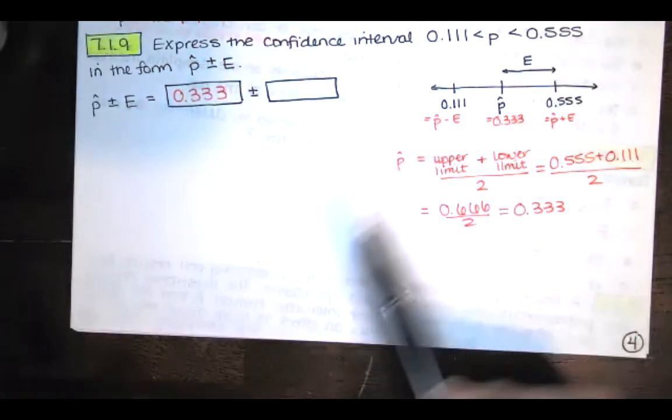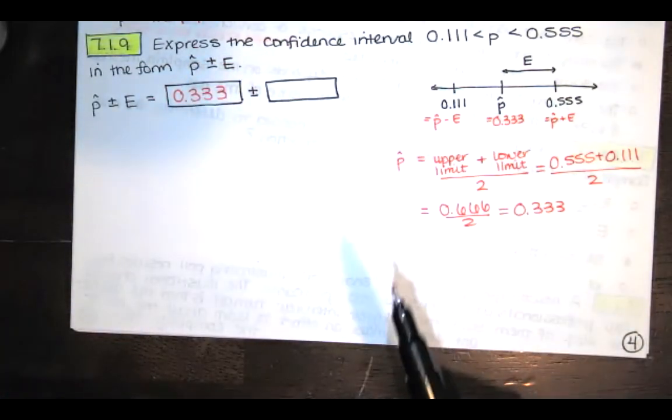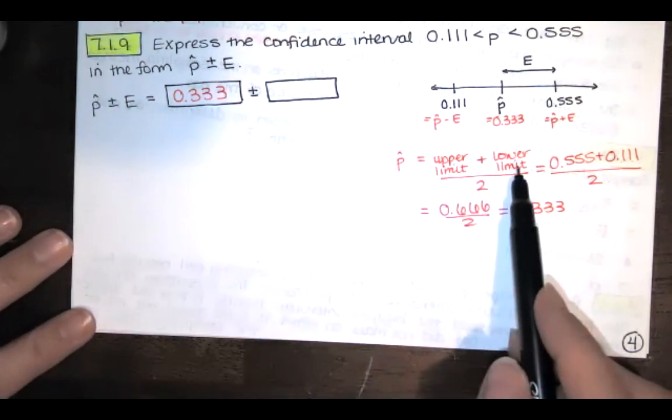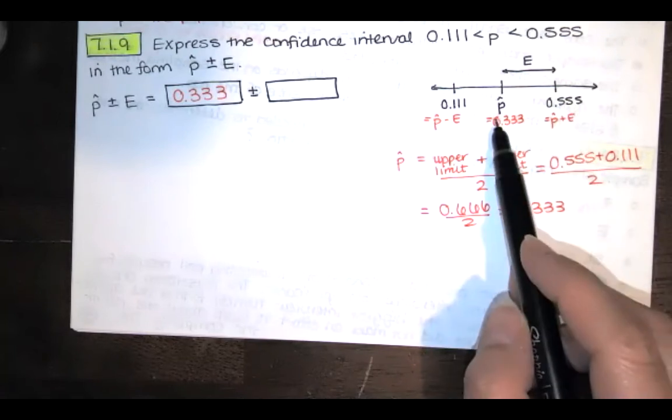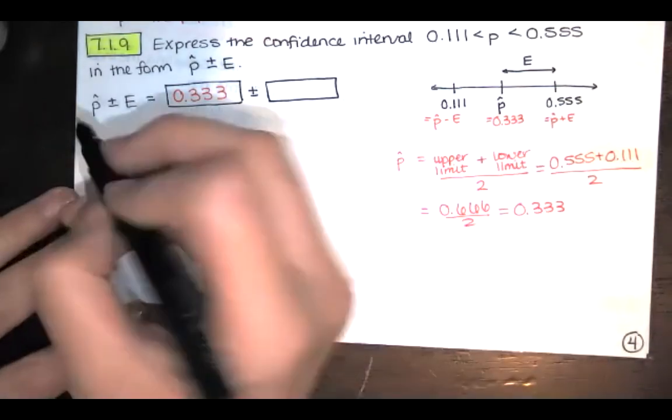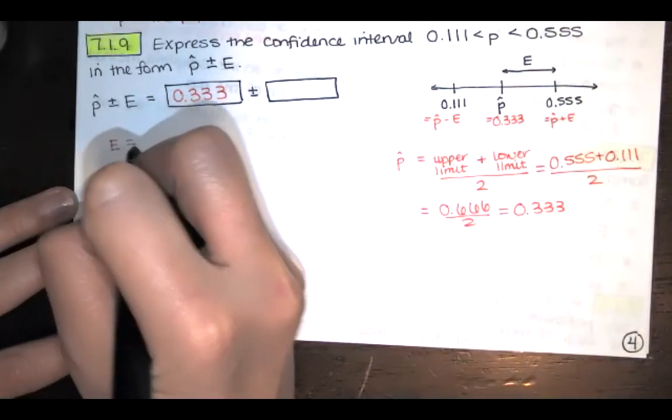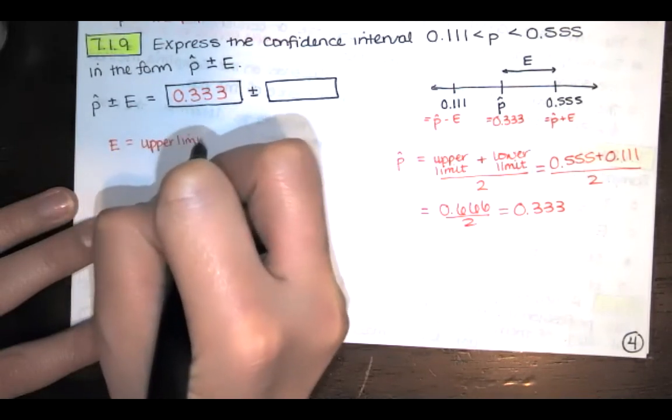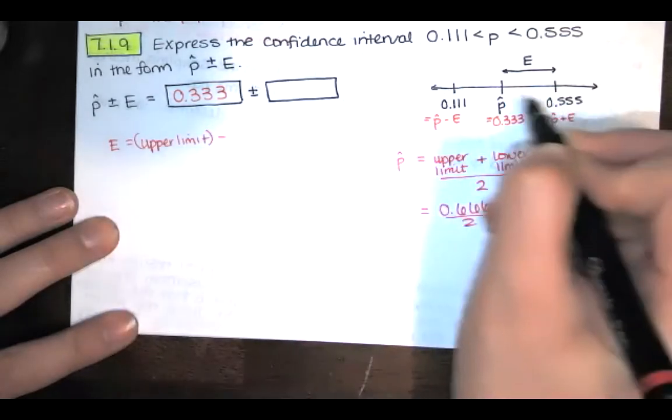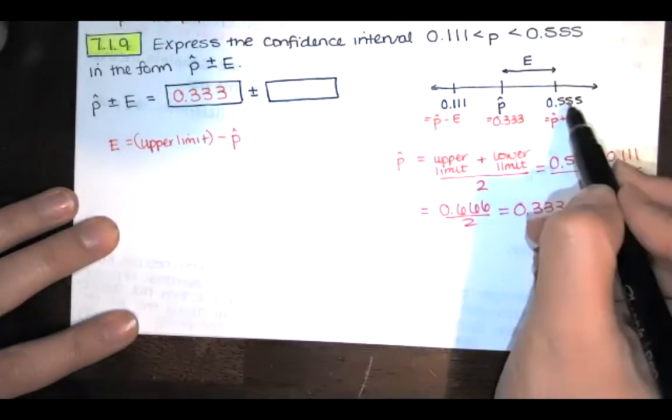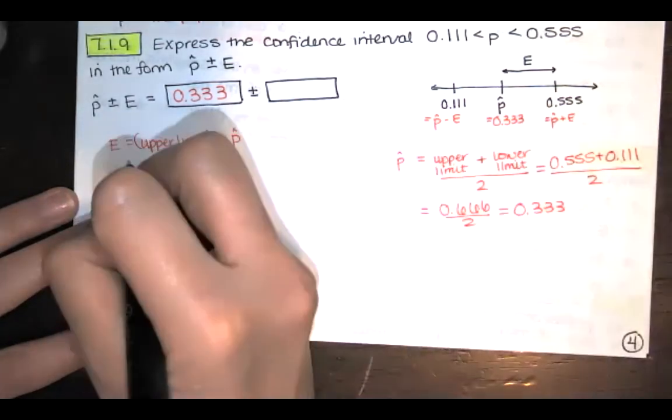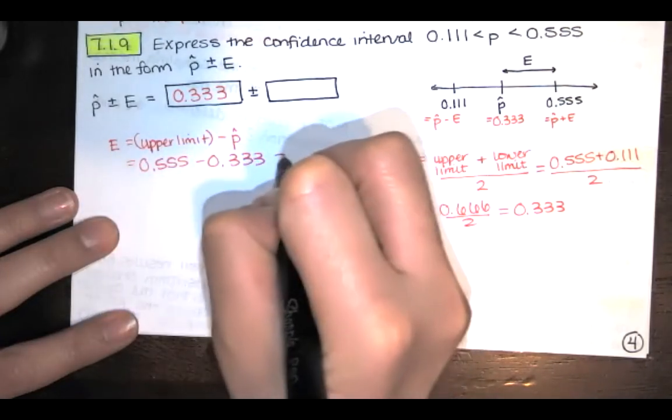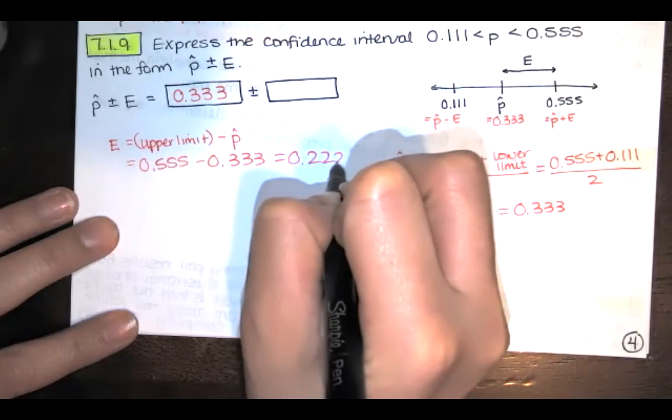Now there are a couple of different ways you could compute the error. The error was given by a formula in your book this way in terms of the upper and lower limits, but I usually like to just compute p hat and then subtract. So the error is equal to that upper limit minus p hat which you just found. So that's 0.555 minus 0.333, which is 0.222.